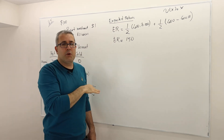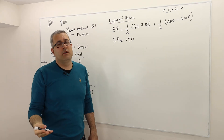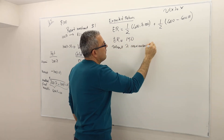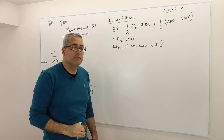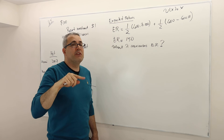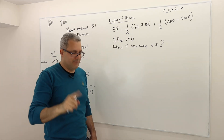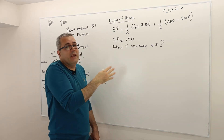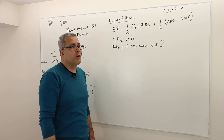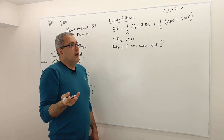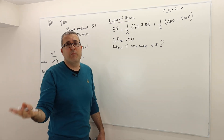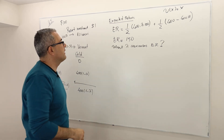Since expected return is independent of lambda, no particular lambda maximizes it — any lambda gives the same expected return of $150. The correct answer is that expected return is independent of lambda, so no lambda uniquely maximizes it.